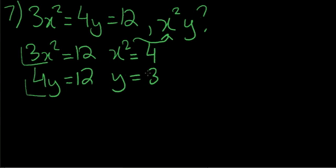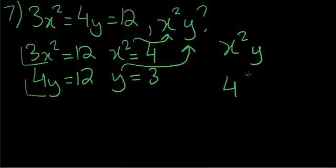Now we need to find the y value. Divide each side by 4 and you get y equals 3. So we found our y value. So x squared y is going to be equal to 4 times 3, which is going to be equal to 12. That's choice D.